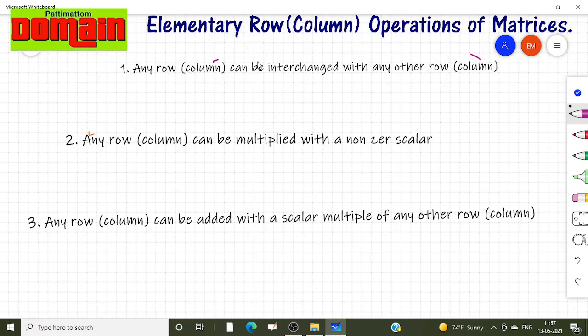Rows can be mutually interchanged and columns can be mutually interchanged. For example we consider this matrix [-2, 3; 1, 4]. This is a square matrix. And we interchange the first row and second row like this. [1, 4] becomes first row here. Here it was second row.